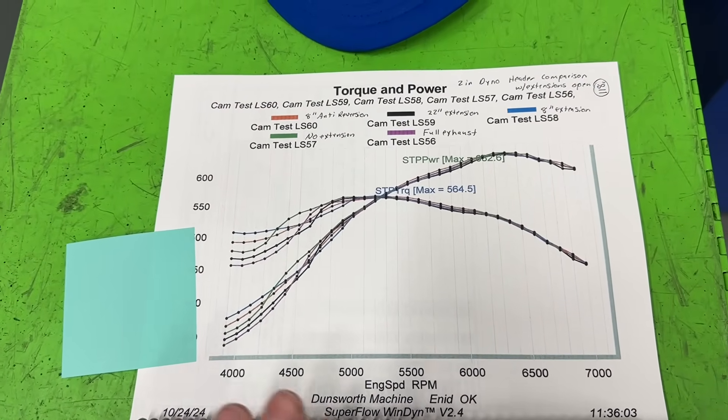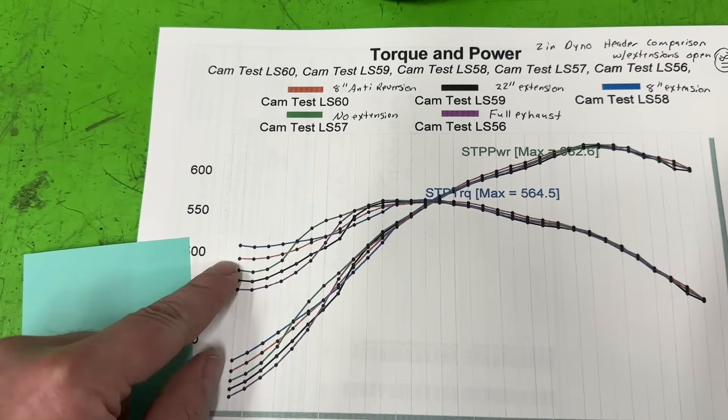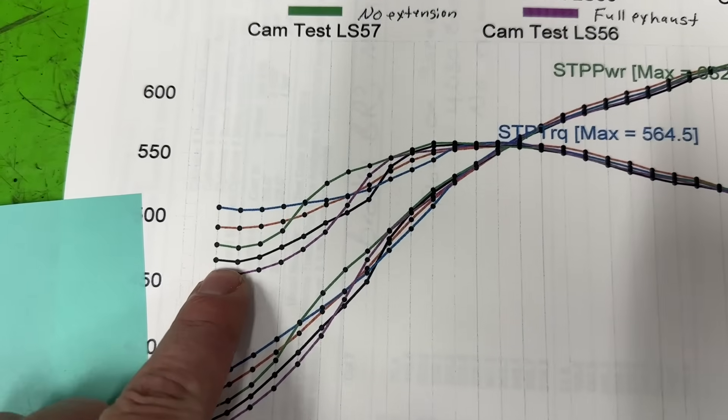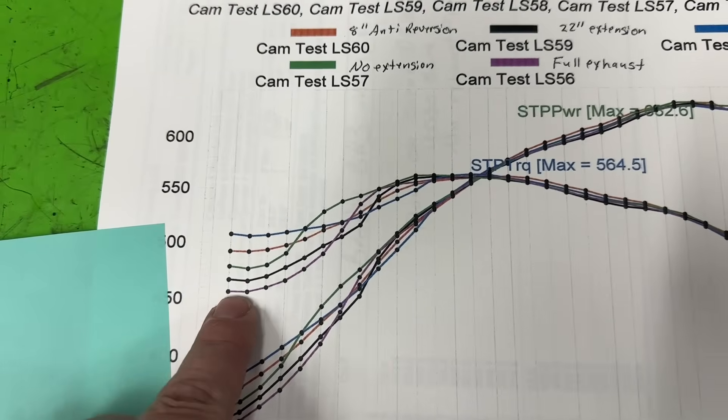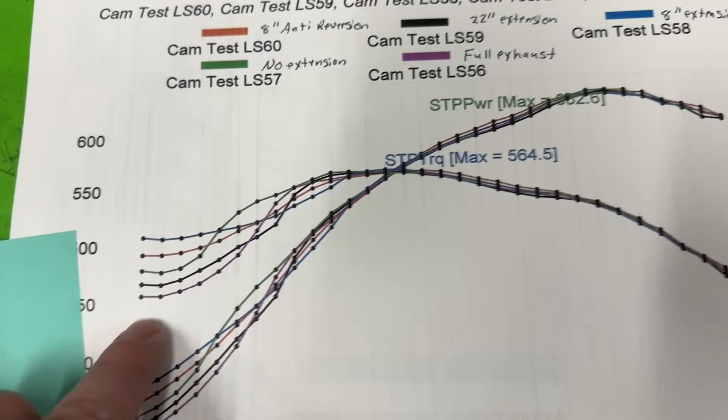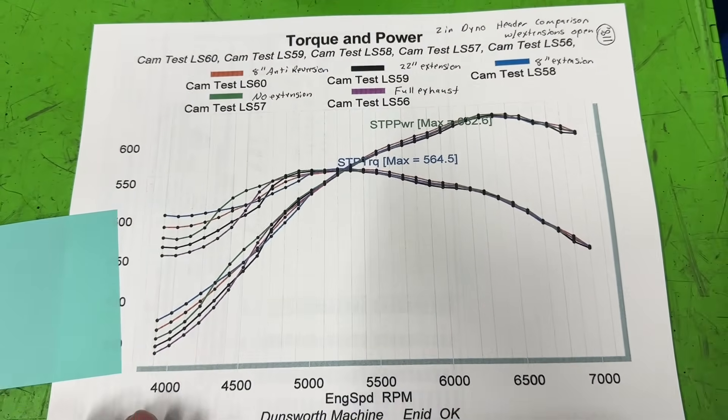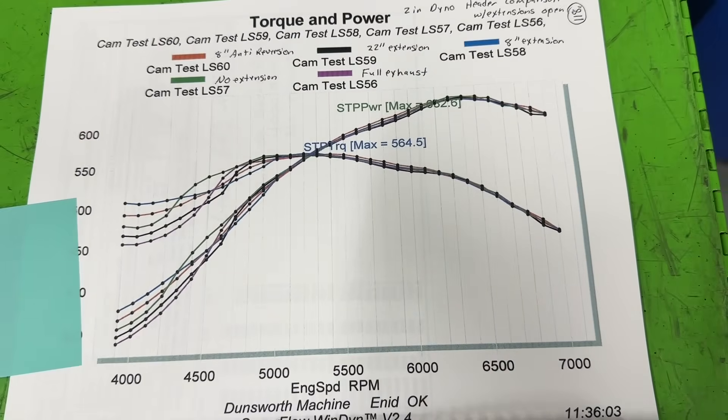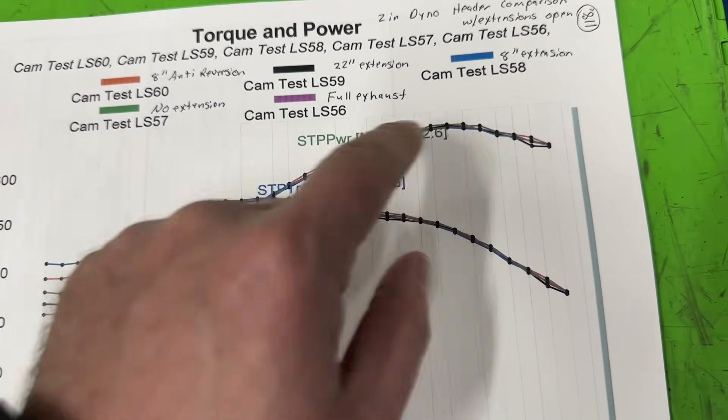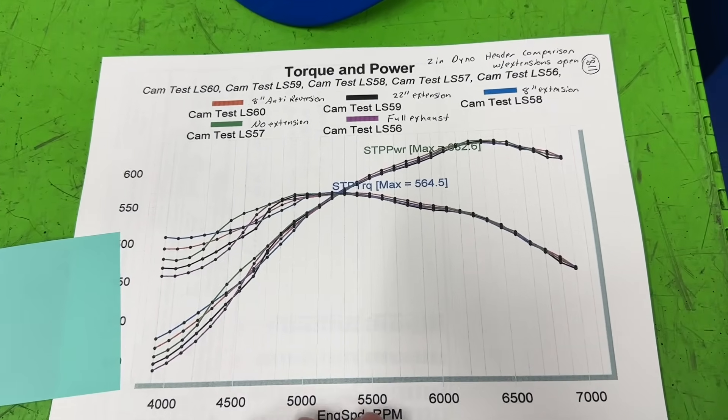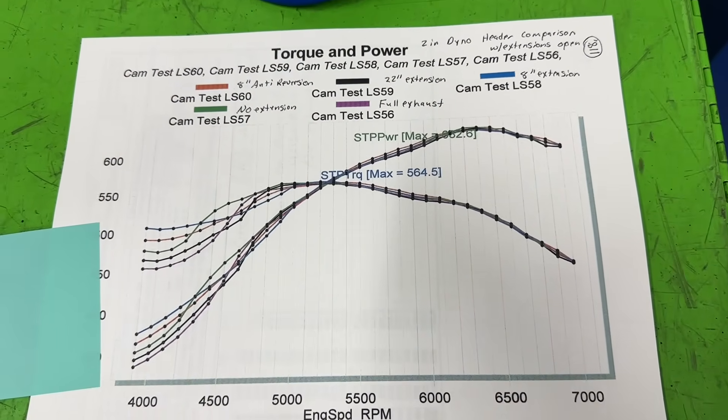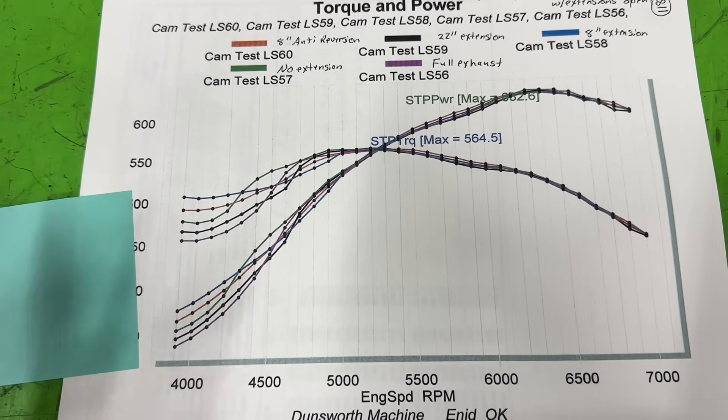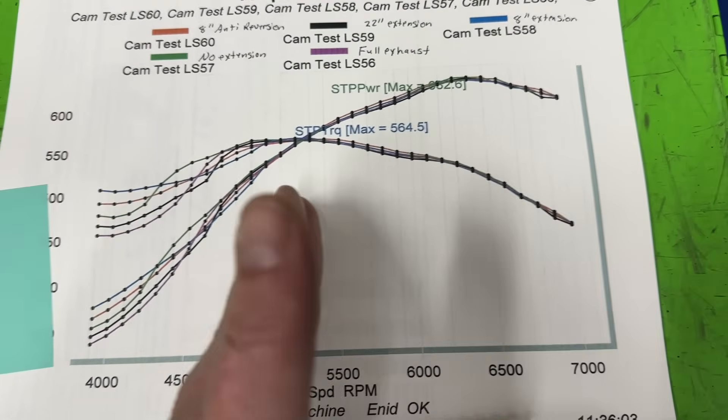Here's all the collectors. So everything. So you've got the 8-inch anti-reversion that's in red there. No extension green, which is down here. The 22-inch extension, the black, down here. Full exhaust down here, and then the 8-inch extension is the blue there. Look at it closer. If you notice, they are tracking virtually together from pretty much, you can call it 5200 on, they don't really change. There's a little bit difference here in the middle but not much. Peaks not at all. So if you think you're going to add an 18-inch extension or 12-inch extension and you're just going to gain 18 horsepower, you won't. From the testing I have done, this is all it changes down here.